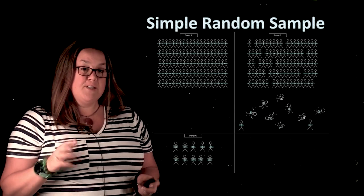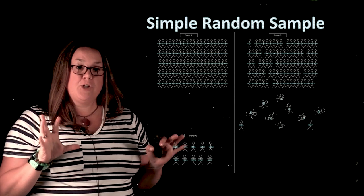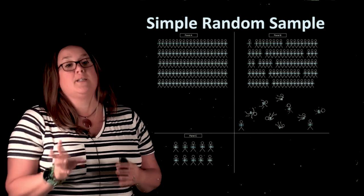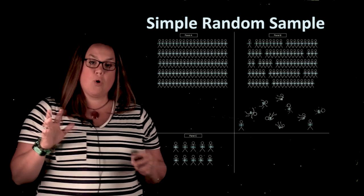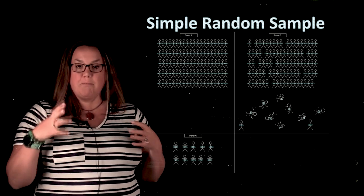So a simple random sample is when everybody in the population has the same chance of being selected as the next person. Now most of the time when you do a simple random sample, you are going to do it through some random number generator.